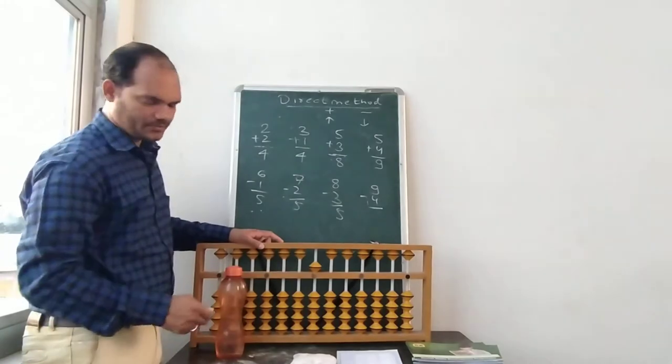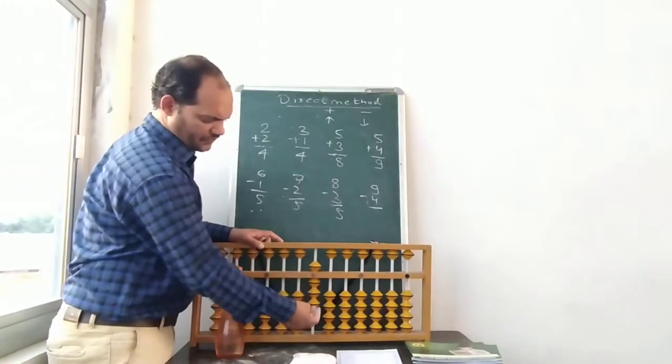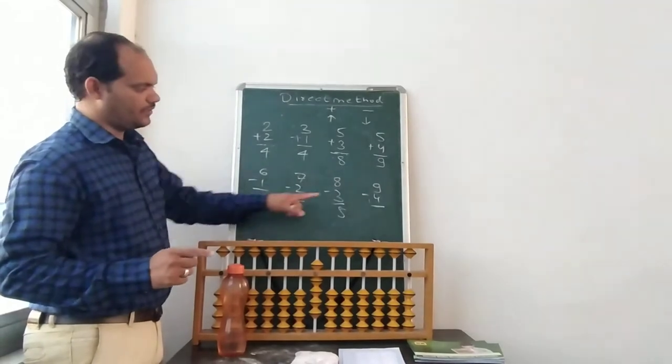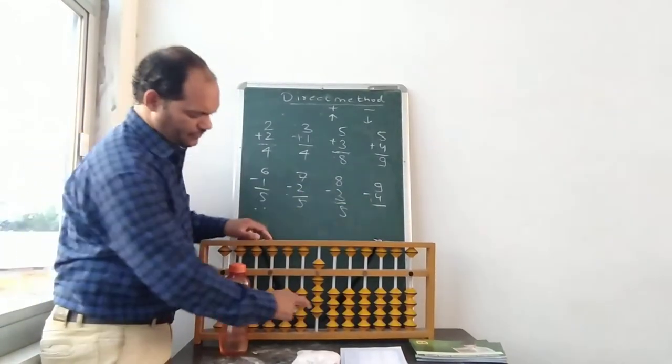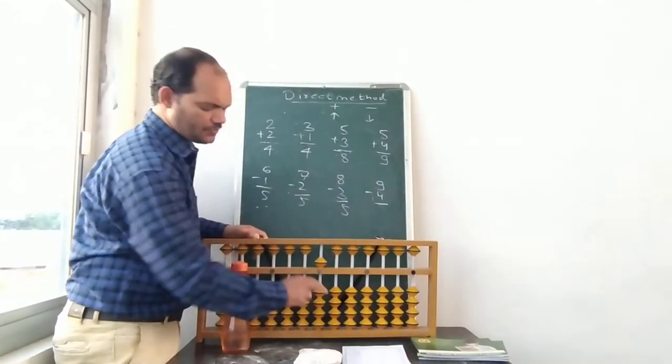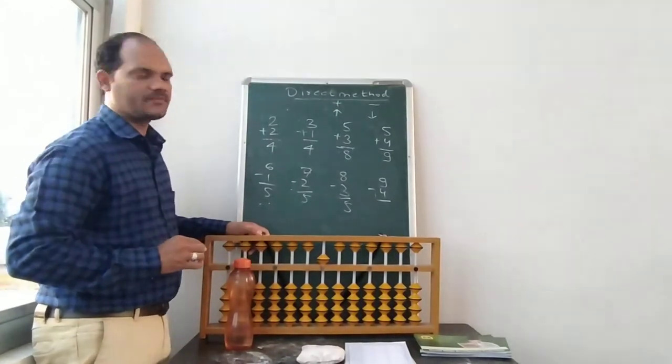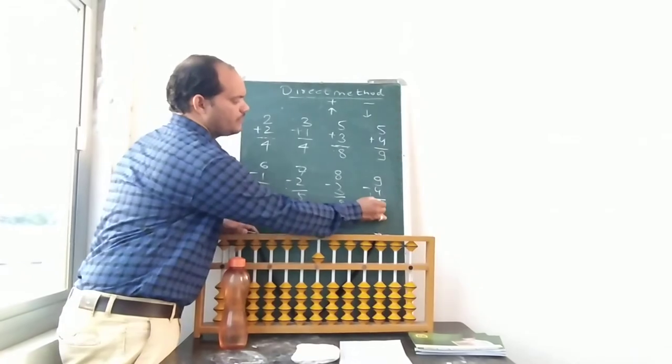Now 9 minus 4 means 5 from up, 1, 2, 3, 4 from down. This symbol is equal to 9. Now we are subtracting minus 4, so 4, 1, 2, 3, 4 which is up from down. So now you can see on sticker there is an answer 5. So 9 minus 4 is 5.